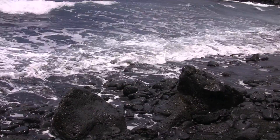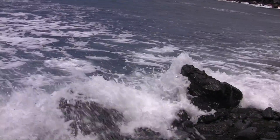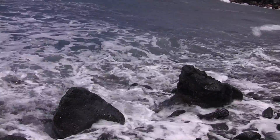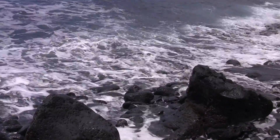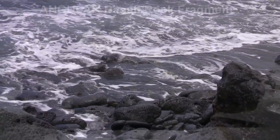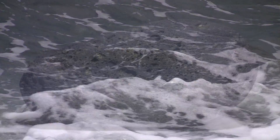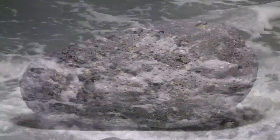Here you can see that the wave energy is high, and you can even hear the boulders bumping into each other as they are being moved by the waves. In this high energy environment, an angular chunk of basalt will be quickly rounded and made smaller. Erosion is taking place and the result is being broken down into smaller and rounder cobbles and pebbles.